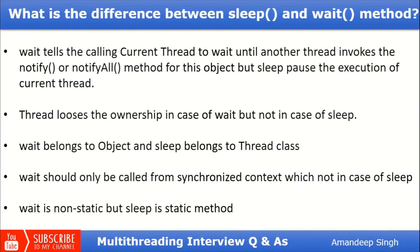The next question is: what is the difference between the sleep() and wait() methods? Wait() tells the current thread to wait until another thread invokes notify() or notifyAll() on the object, whereas sleep() pauses execution of the current thread. When wait() is called, the thread loses ownership of the object's lock — meaning it will no longer hold the lock. But when Thread.sleep() is called, the thread keeps holding the lock and simply pauses execution.